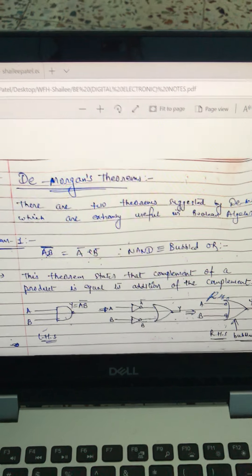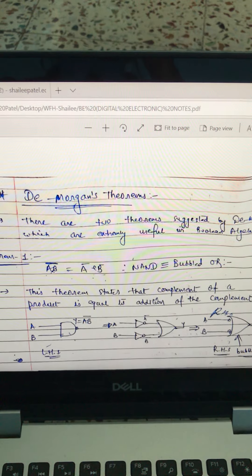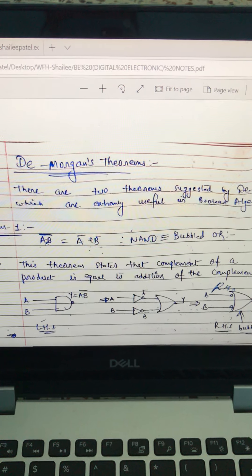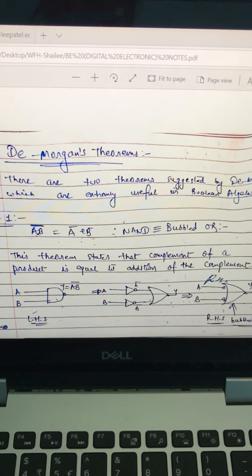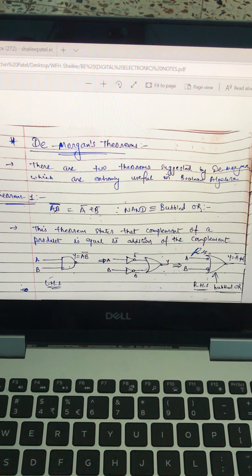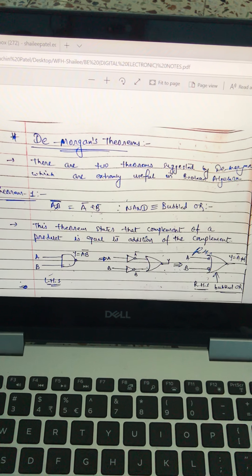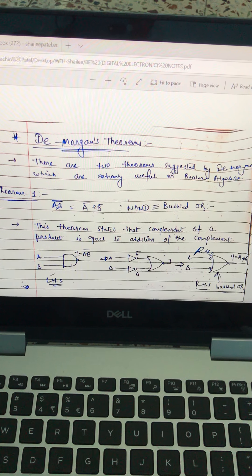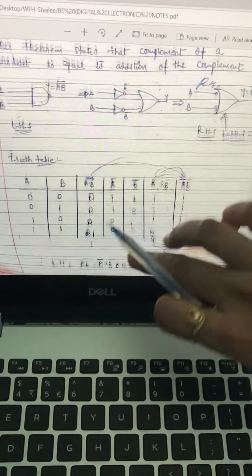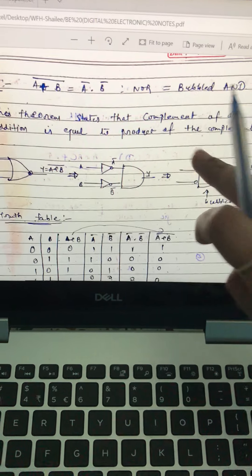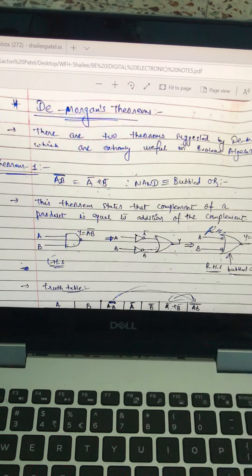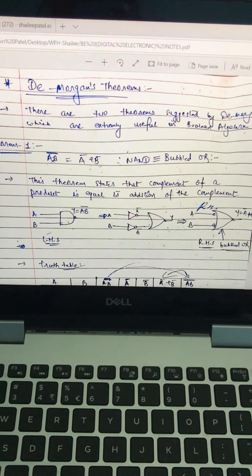The last and most important law is De Morgan's theorem for Boolean algebra. The scientist named De Morgan had found basic two laws for Boolean algebra, and with it he found two different types of logic gates which are bubbled OR and bubbled AND gates. So what are bubbled OR and bubbled AND gates, and how does this De Morgan's theorem work?